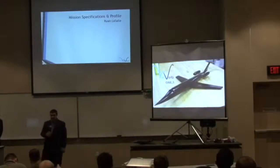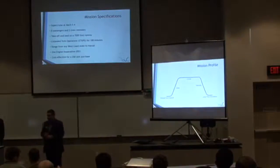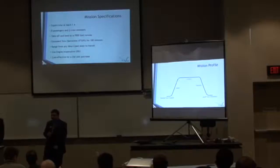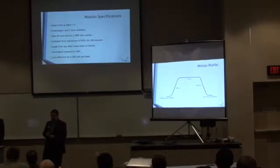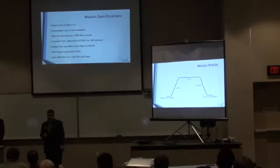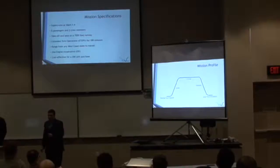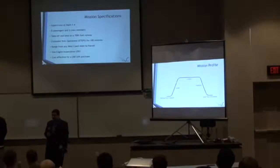Now I'll go over the mission specifications and profile for 1-5. We were required by the request for proposal to supercruise at Mach 1.4, meaning we had to fly without afterburner at Mach 1 and sustain flight at Mach 1.4. We also had to carry eight passengers and two crew members, and take off in a 7,000-foot runway to allow us to use a large portion of the airports in this country. We also had to meet extended twin operations with one engine inoperative because we're a twin engine business jet, and fly from any west coast city to Honolulu.